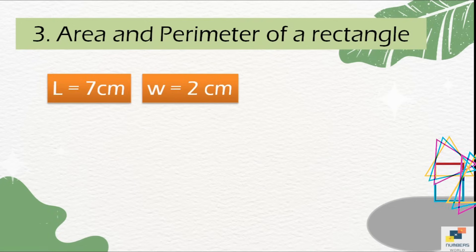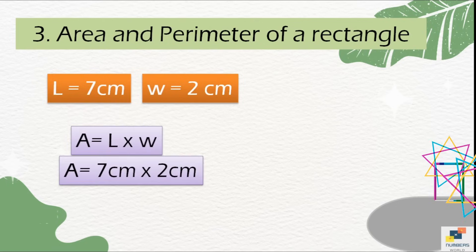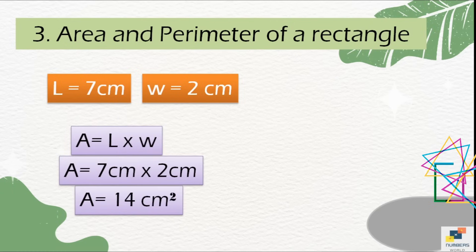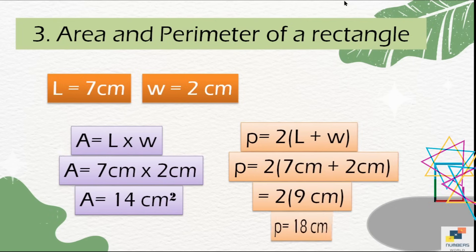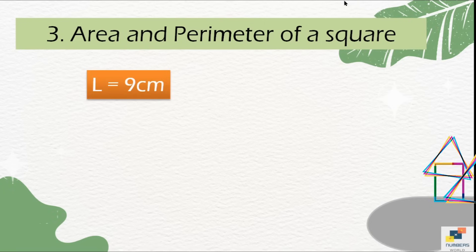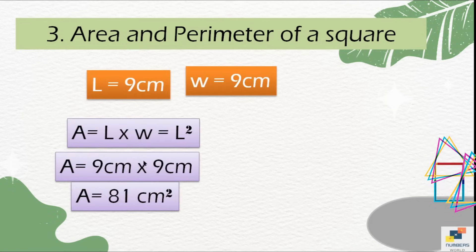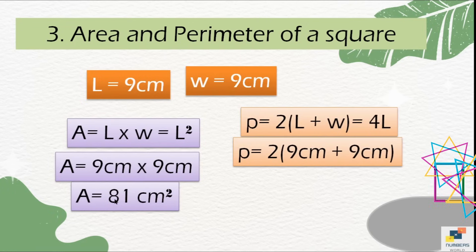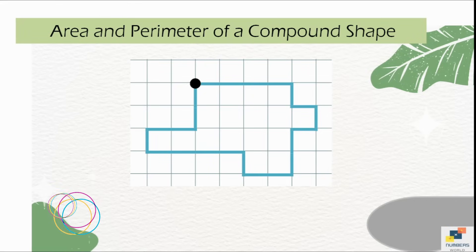The third type of question is the easiest: length and width are directly given and no shape is shown. Simply write the formula for area, multiply, and solve. For perimeter, write the formula, put in the values, and find the answer. If a square is given, the values are the same — your choice which formula to use.